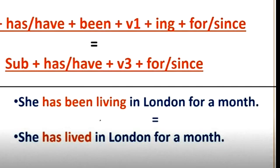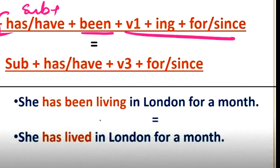There is another very important thing here. Subject plus has/have plus been plus verb -ing form with for or since. And also: subject plus has/have plus verb third form. Both of these work. This is present perfect continuous tense and simple present perfect tense.